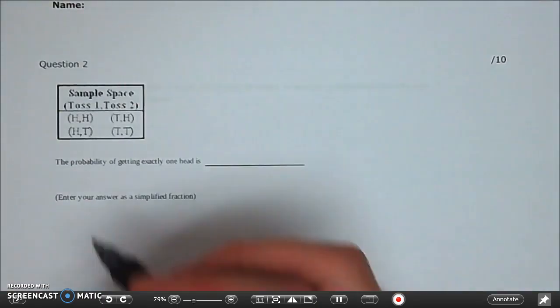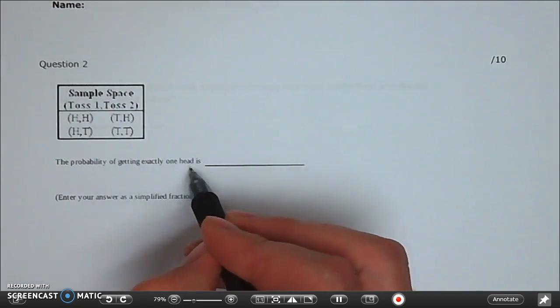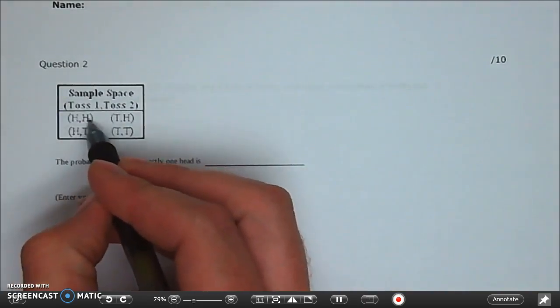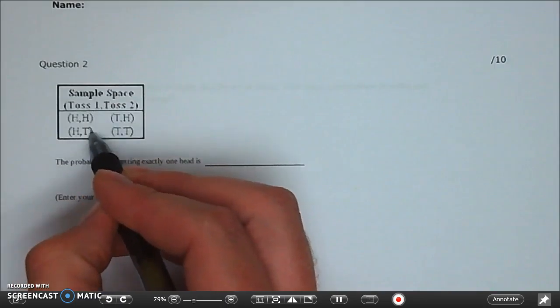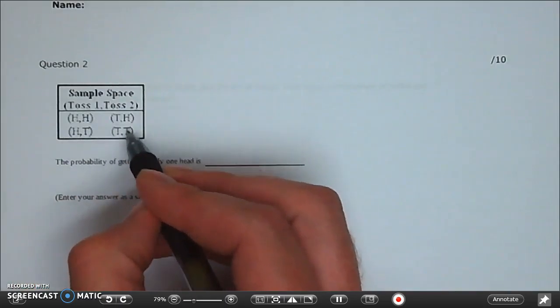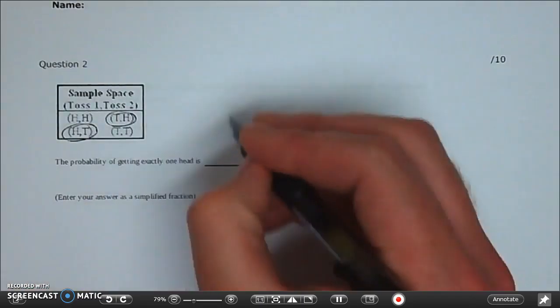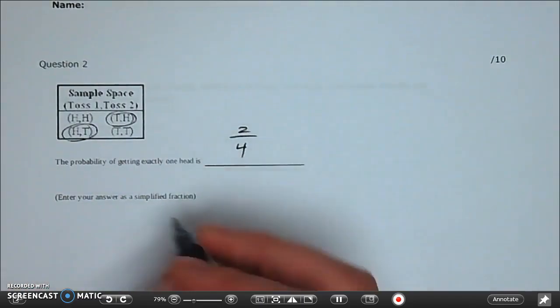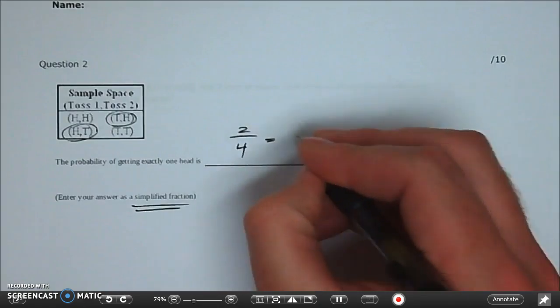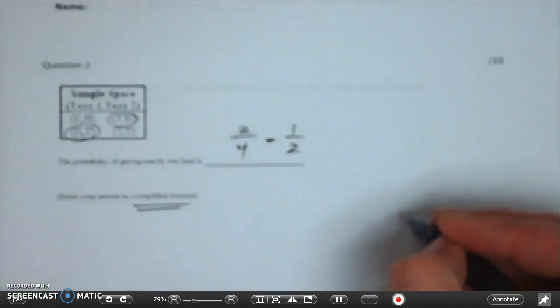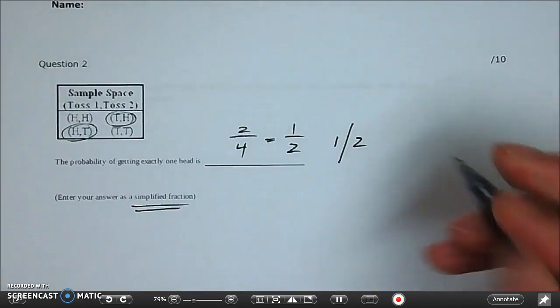Question 2. Probability of getting exactly one head we don't want two heads we want one that's one we want one head that's two there's no heads there so that's one two options out of four but they want a simplified fraction and if we simplify that that's one over two or one slash two on your computer.